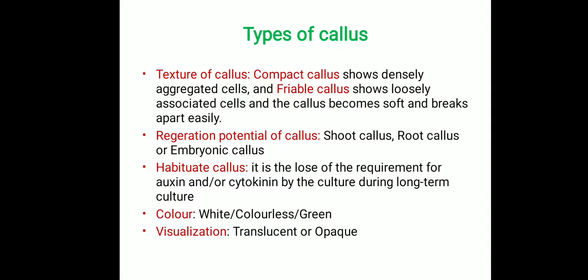Based on regeneration potential, callus may be categorized into shoot callus, root callus, or embryogenic callus. If the callus is partially producing shoot or micro-shoot-like organs, it is called shoot callus. If it tends to produce roots, it is called root callus. If the callus is partially producing somatic embryo-like cells, it is called embryogenic callus. We also use the term habituated callus, meaning that over prolonged periods of subculture, the callus loses the requirement for auxin or cytokinin.